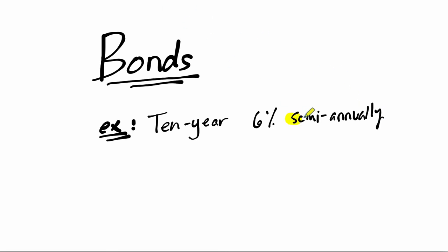Well let's take apart the language here. Semi-annually means twice a year. So twice a year you're going to get a payment on this bond and the amount you're going to get is 6% cut in half. So 3% twice a year and that's going to happen over 10 years.